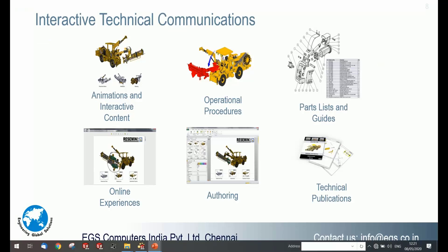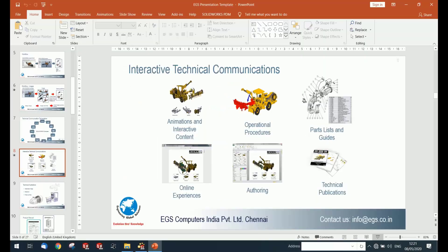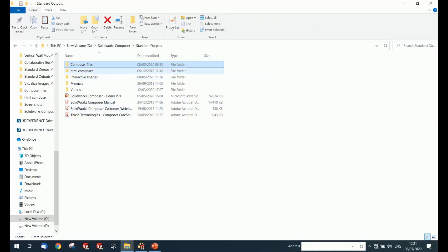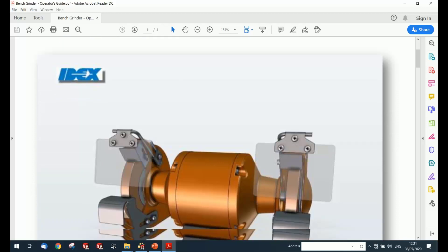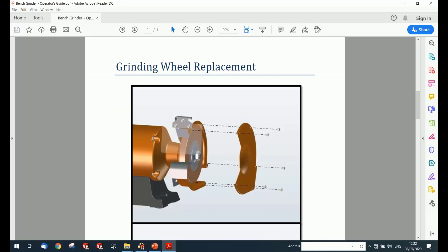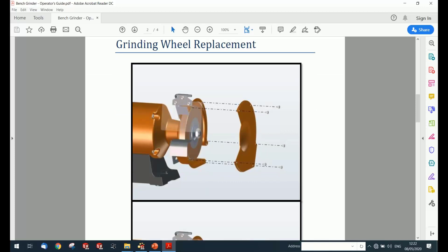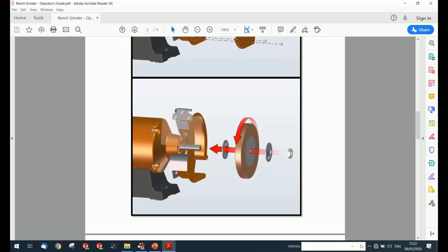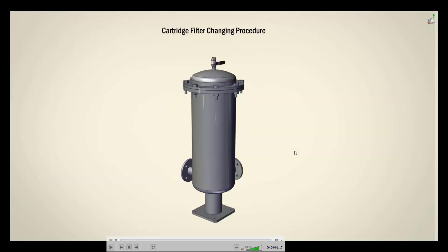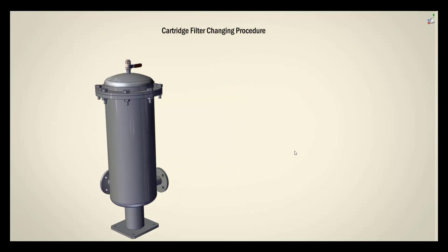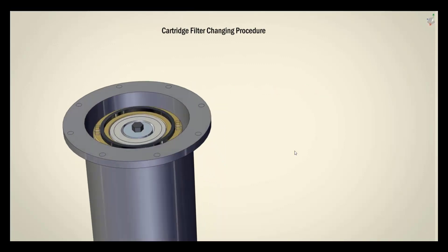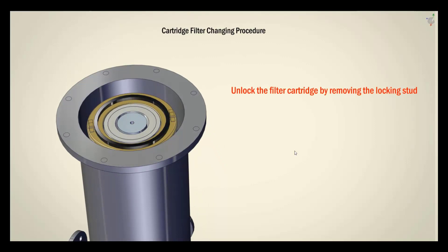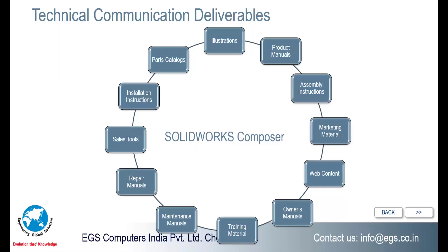Composer is not only capable of creating animations and static images — you can also produce standard manuals. Here is a bench grinder operator guide where all images in the document come directly from Composer. You can also generate video files — not just Composer or HTML files, but full MP4 video formats, which are easily shareable by email or messaging apps with people at different locations.